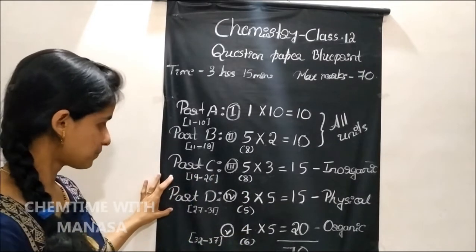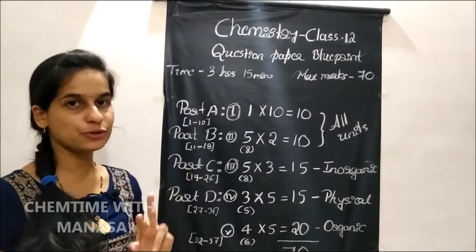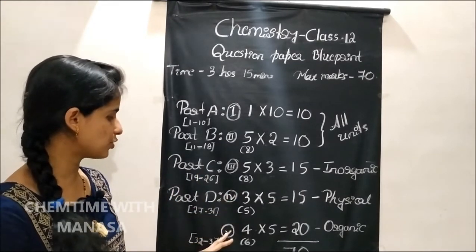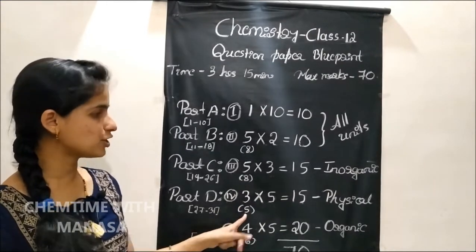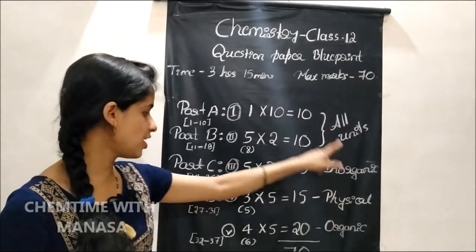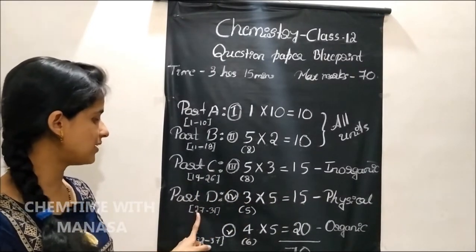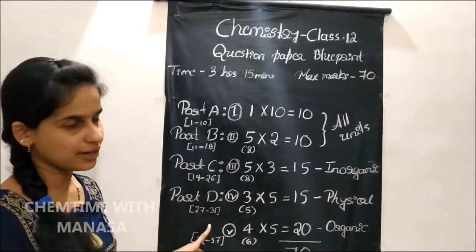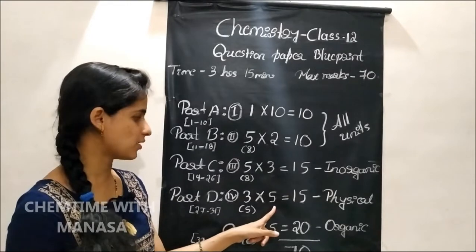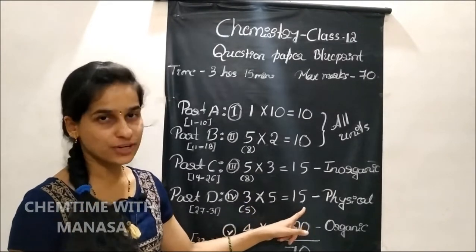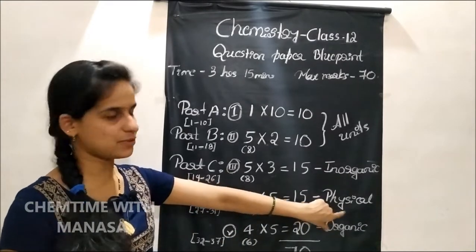Then Part D. In Part D, there will be 2 main questions — question number 4 and question number 5. In case of main question number 4, there will be 5 questions from physical chemistry, from question number 27 to 31, and you have to answer 3 questions. Each question carries 5 marks, so totally there are 15 marks in main question number 4.